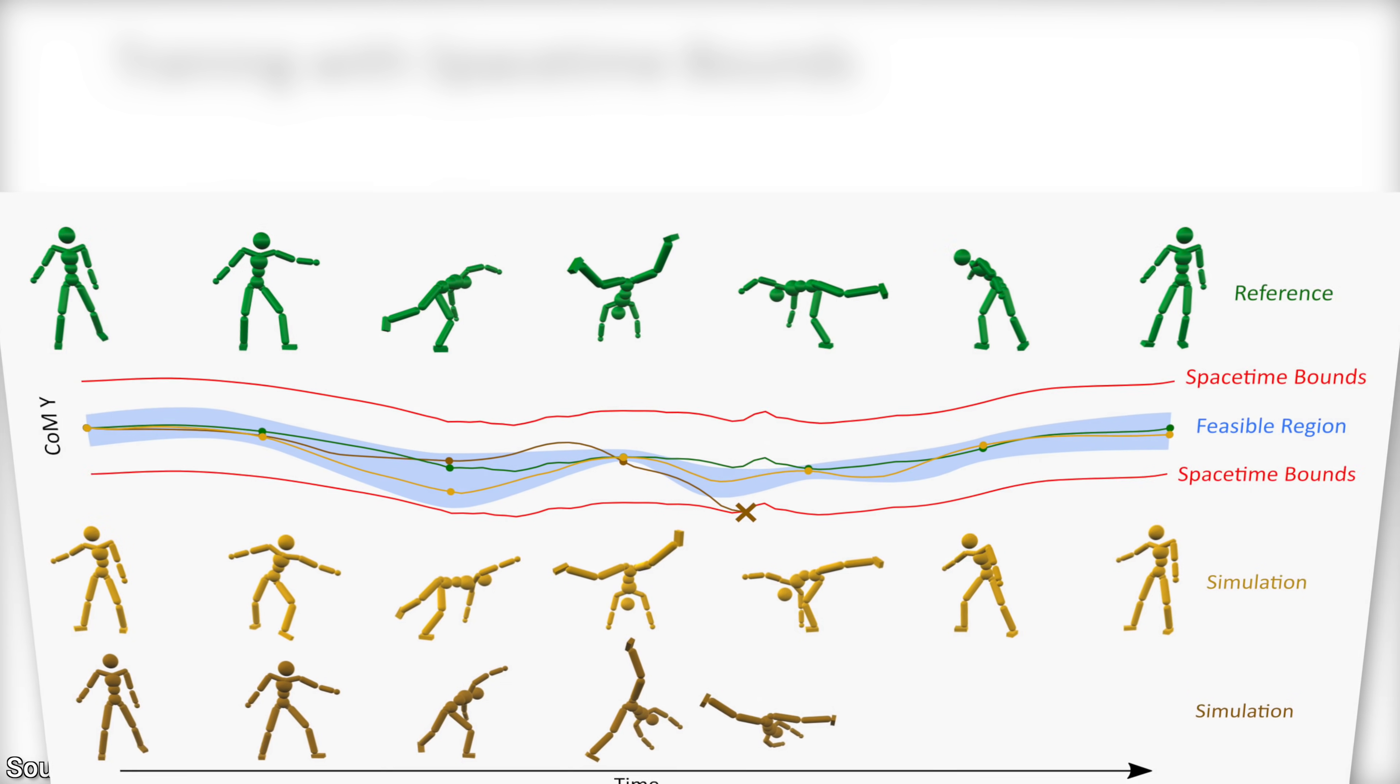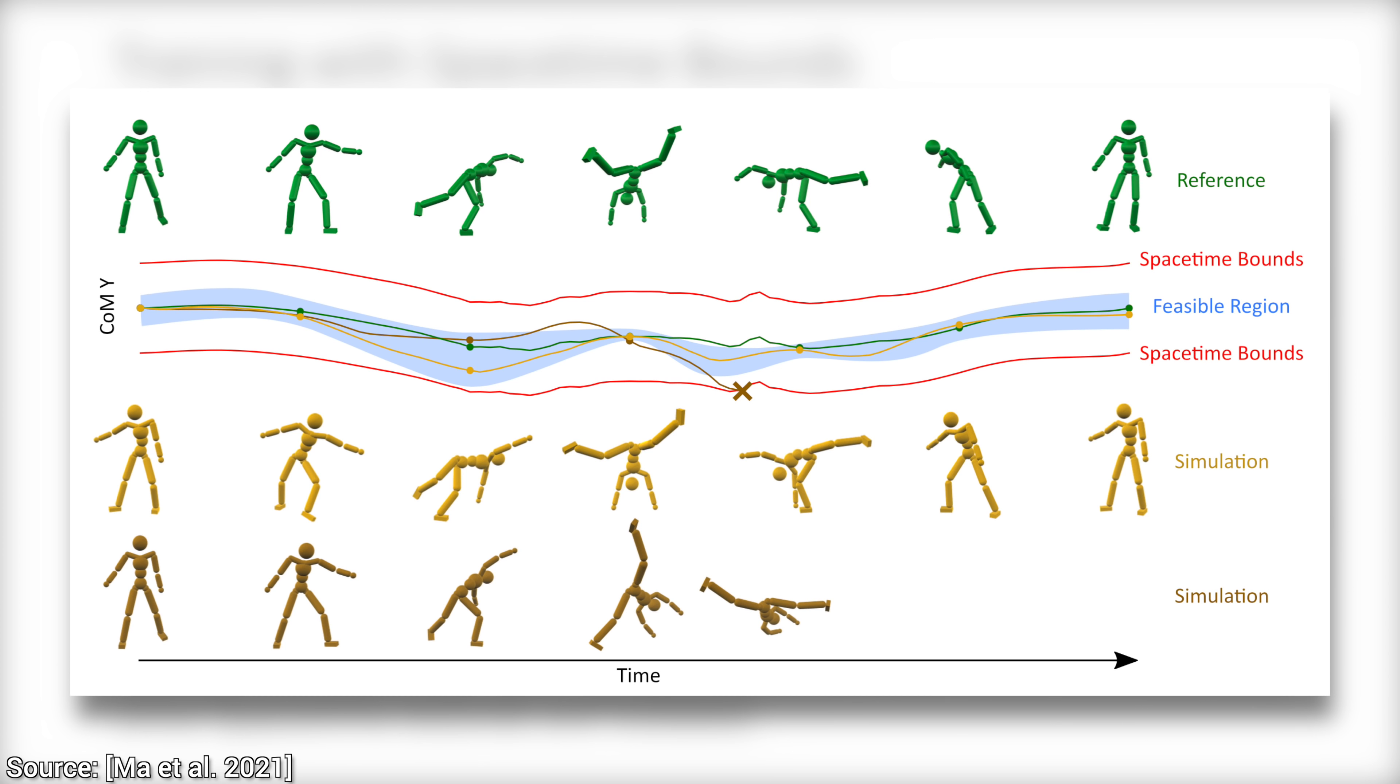If we wish to add a little style to the equation, we can set relatively loose space-time bounds around it, leaving room for the AI to explore. If we wish to strictly reproduce the reference motion, we can set the bounds to be really tight instead.